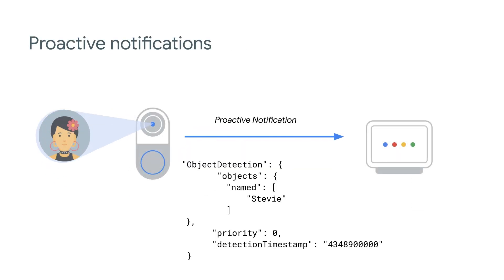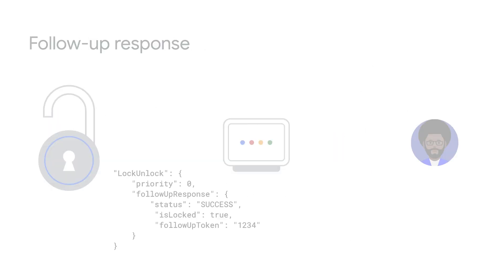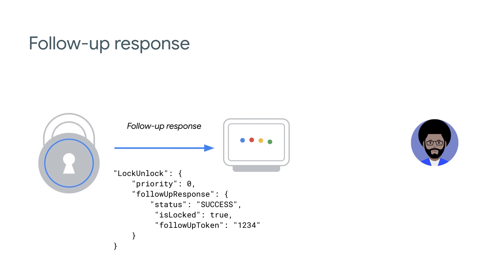Notifications are also a useful feature to implement for your end users. Proactive notifications are helpful to indicate when cameras or doorbells detect objects or when security systems are arming. Alternatively, you can implement follow-up responses to notify users once a device completes the requested action, such as when a garage door finishes closing or the front door has been locked.